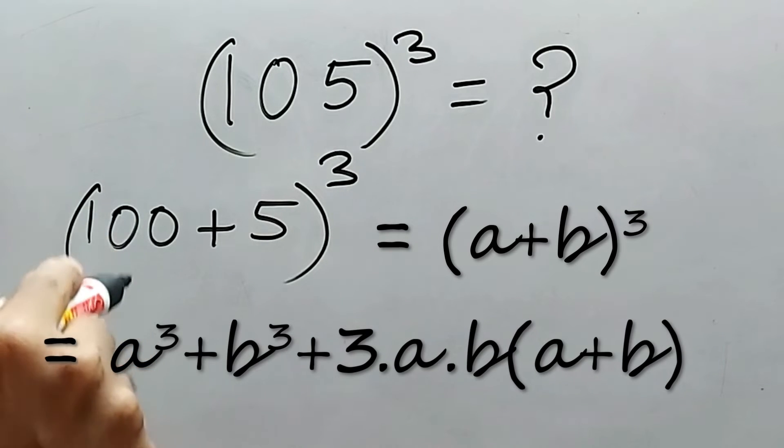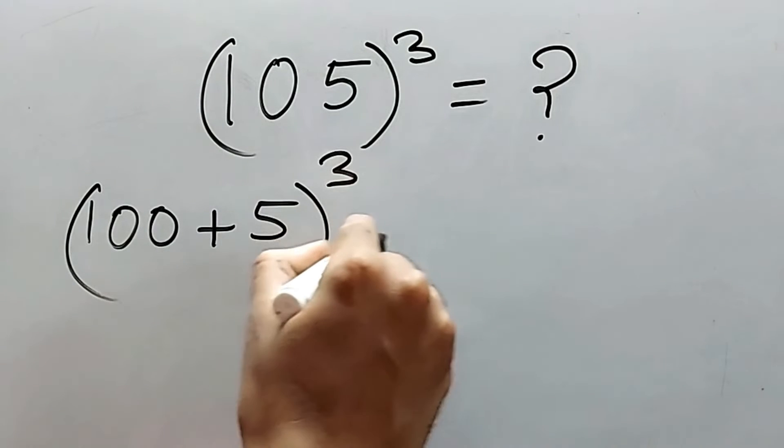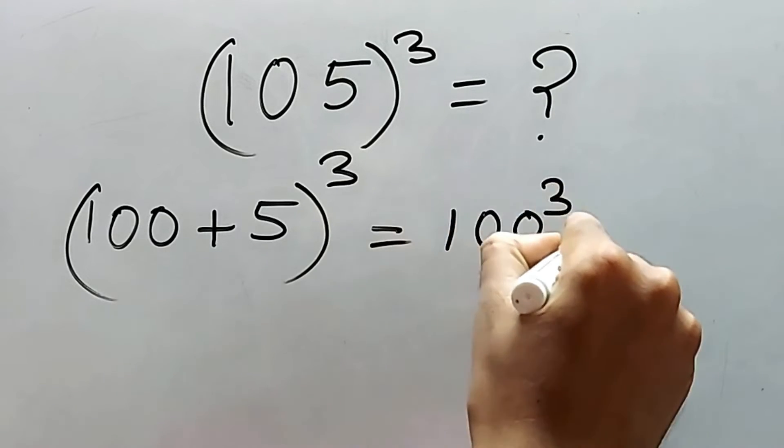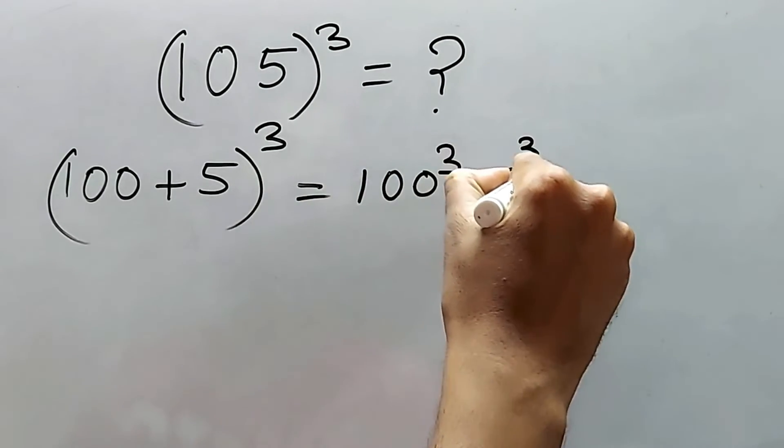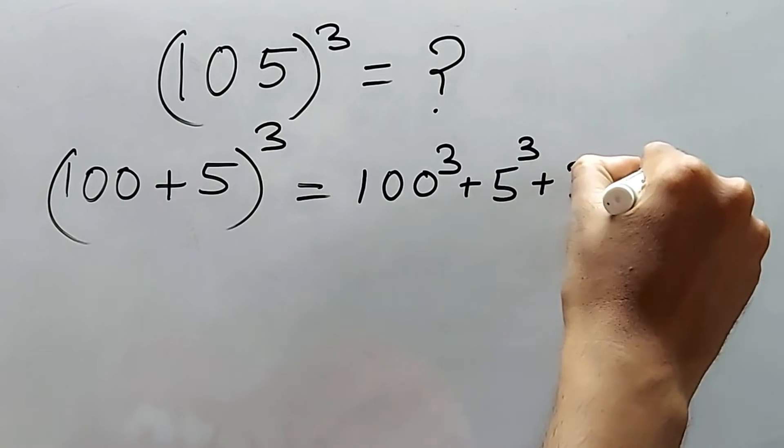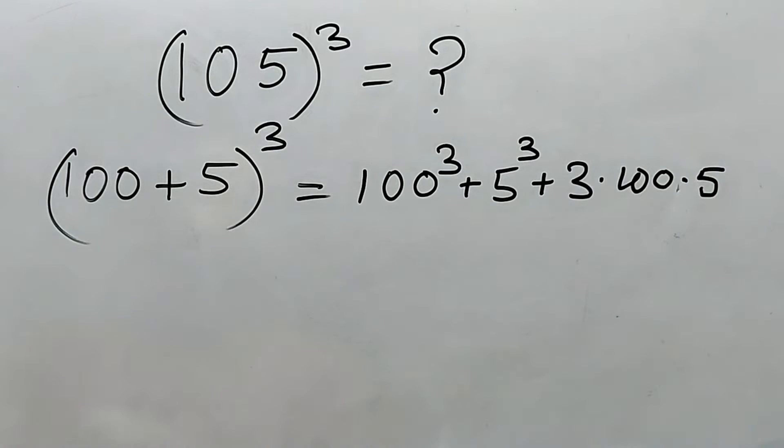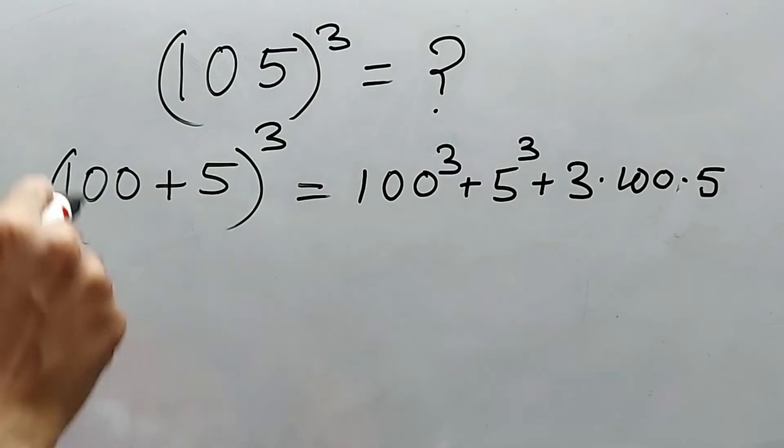So a cube, that is 100 cube, plus b cube, that is 5 cube, plus 3ab, 3 into 100 into 5 into a plus b. A plus b means 100 plus 5. Now I'm not going to write it anymore, I'll write it directly.